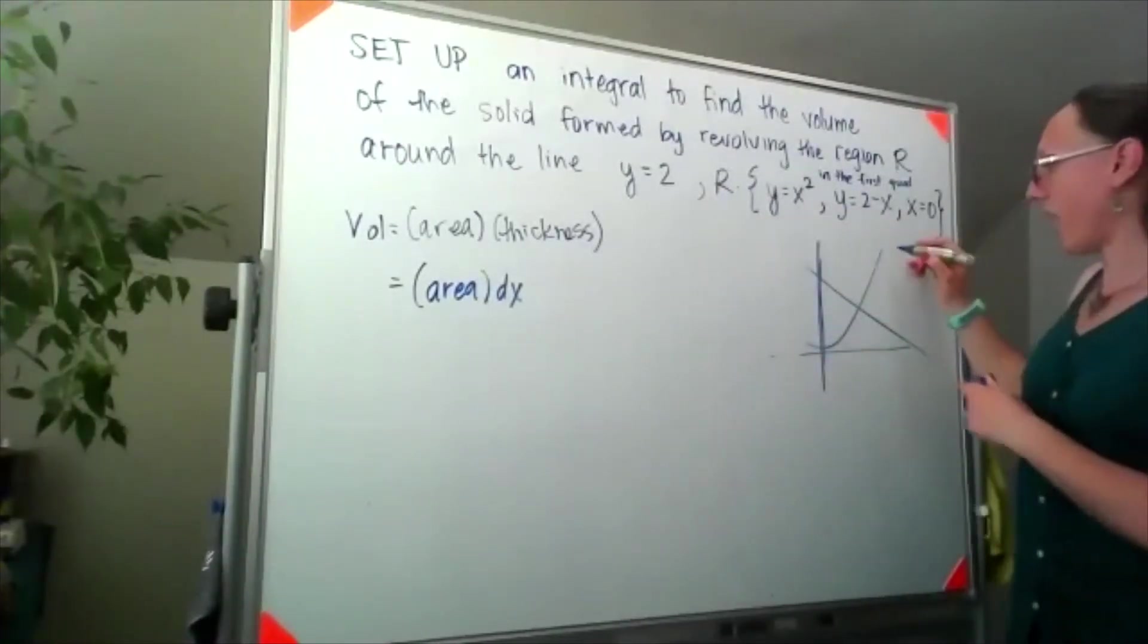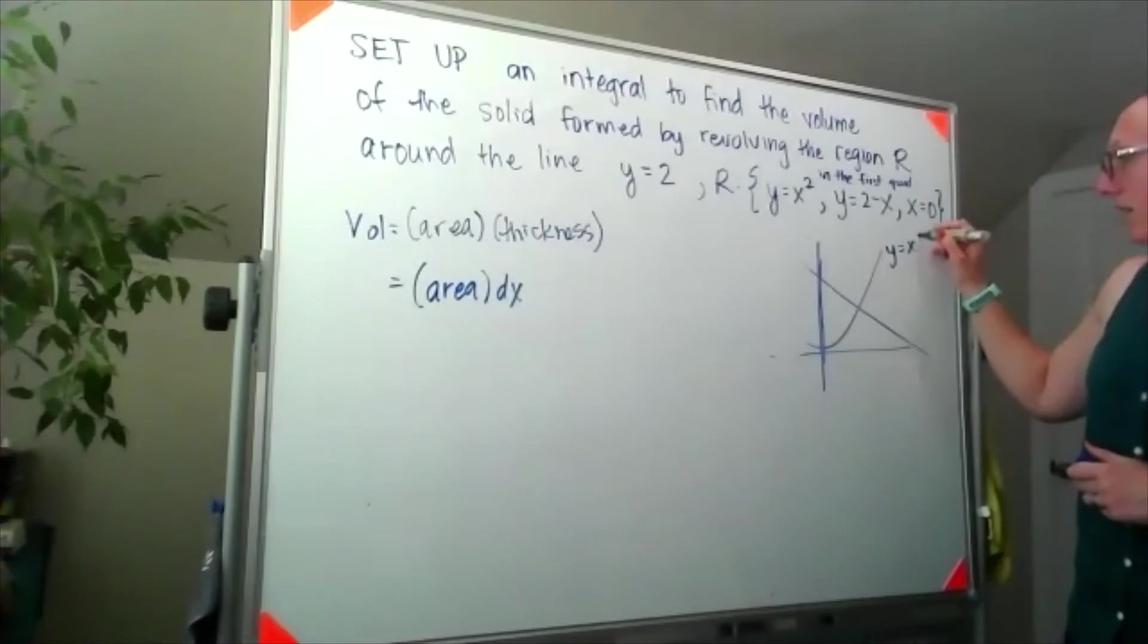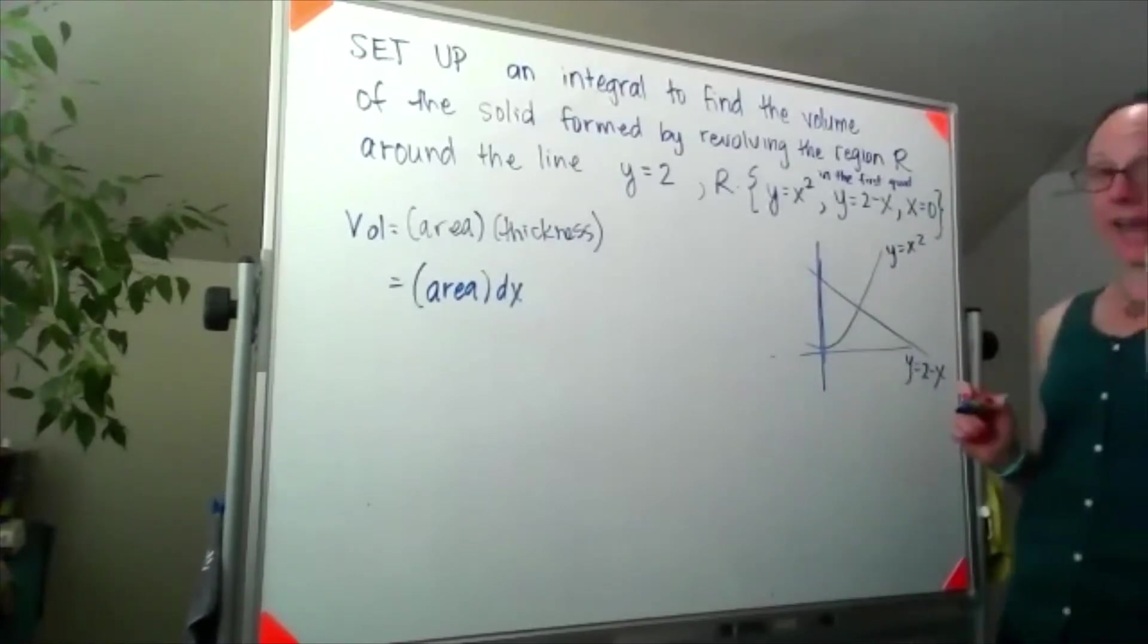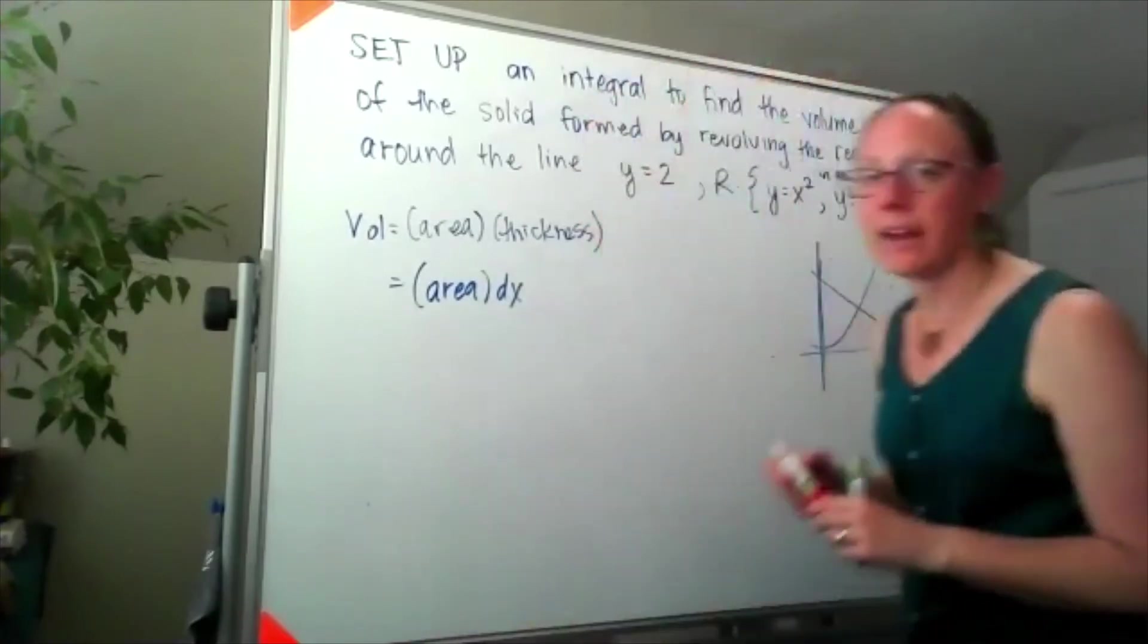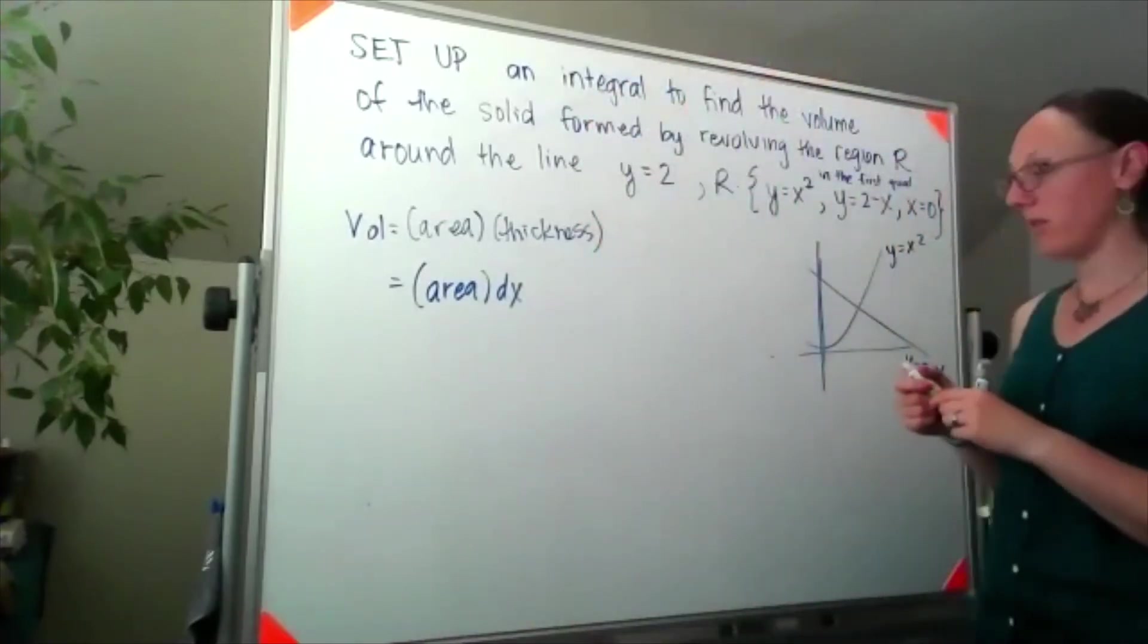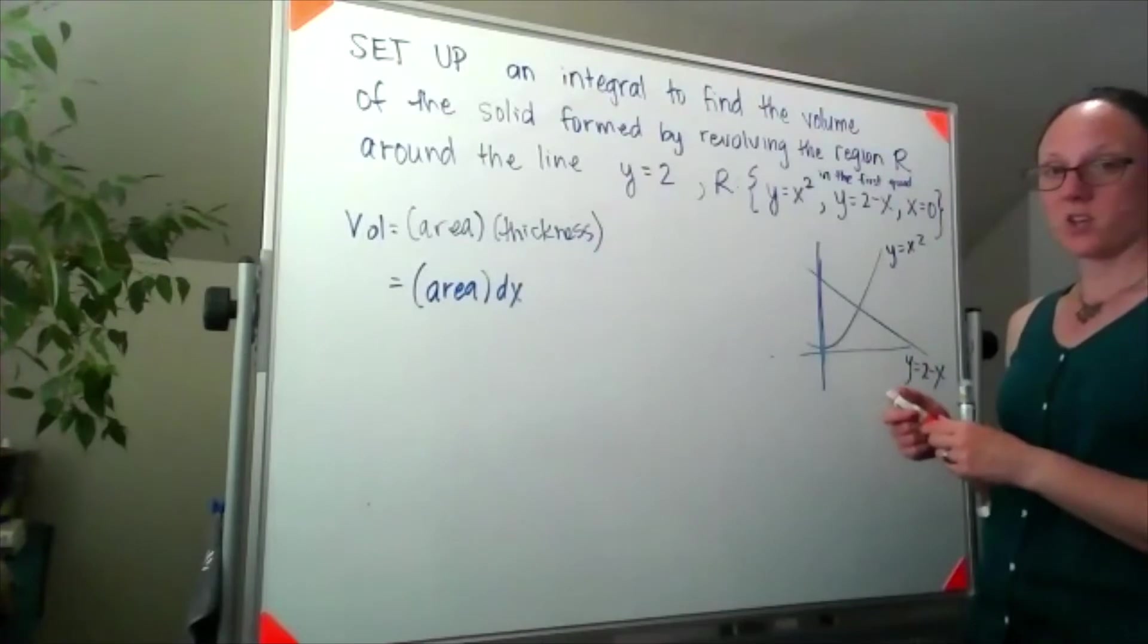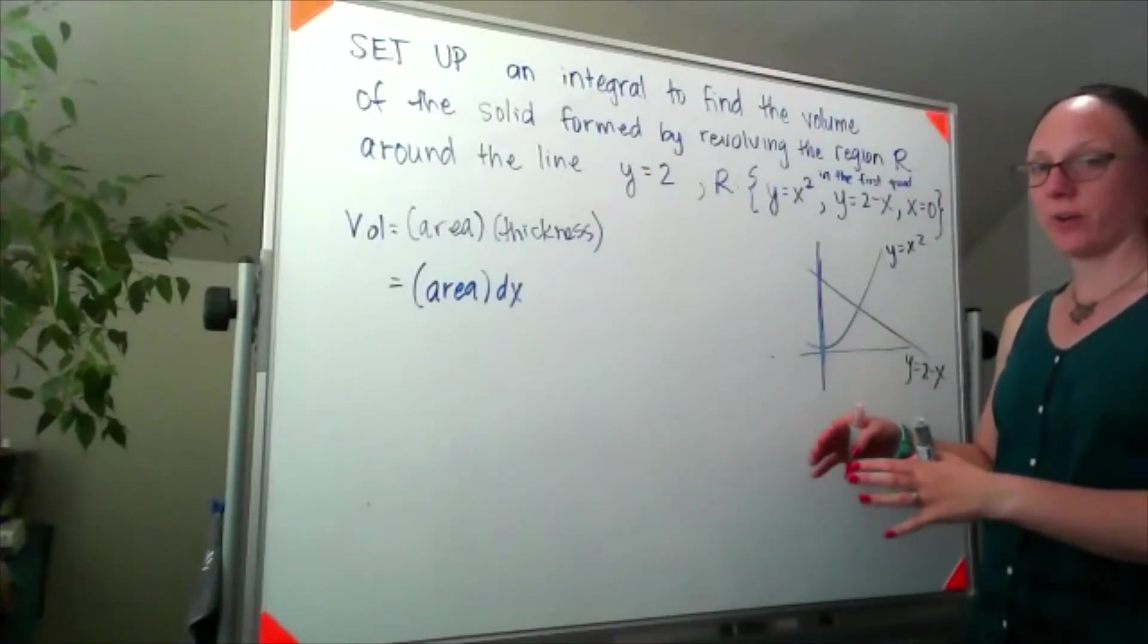Okay, so I've got y equals x squared, y equals 2 minus x, and I know that we're revolving that around the line y equals 2. So now I have to kind of place y equals 2 in here.